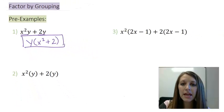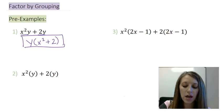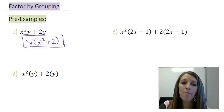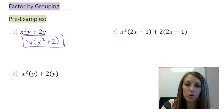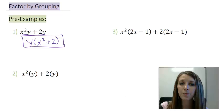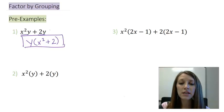Now let me take example one and make some minor adjustments, and that's what we see in example two. I have x squared times y plus 2 times y, but this time my y is in parentheses rather than just being multiplied in the regular fashion. So my question to you is: is there a difference between example one and example two, and if so, what difference does that make?